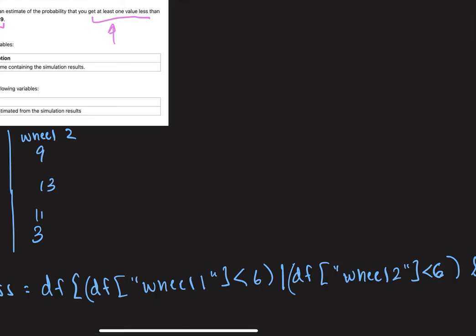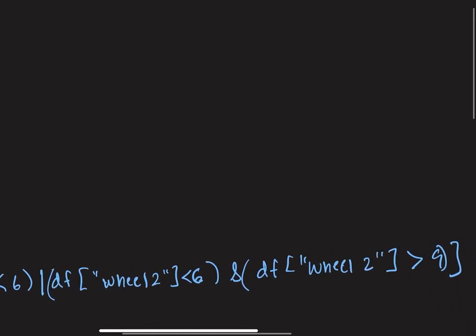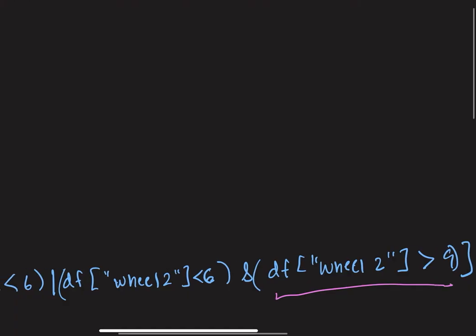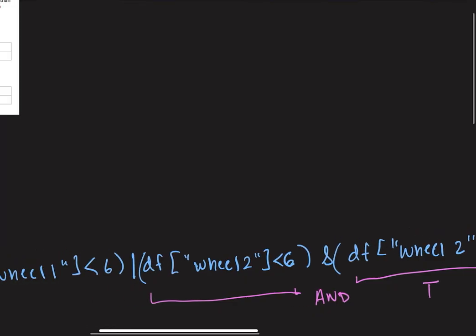And then the second part is that we want the second value, so wheel 2, to be greater than 9. So we would do and DF wheel 2 is greater than 9. But if we take a closer look at this, we want wheel 2 to be greater than 9, but we're also saying that we want wheel 2 to be less than 6. So because this is an and, we know that if this needs to be true, in order for this entire conditional to be true, both sides of the and operation need to be true.